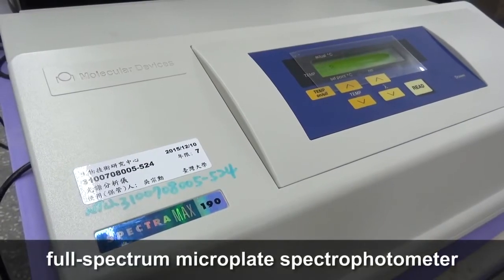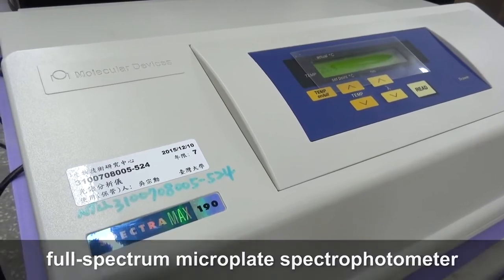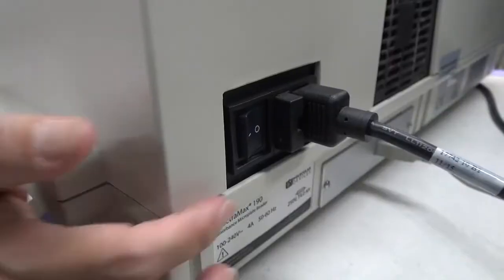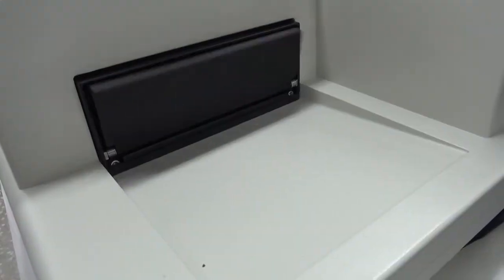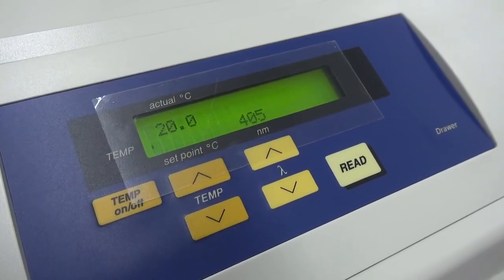Now we demonstrate how to operate a full-spectrum microplate spectrophotometer. Remove the dust cover and turn on the machine. Wait for the microplate holder to extend out and start up to be completed.